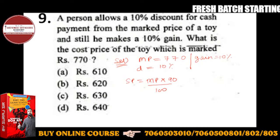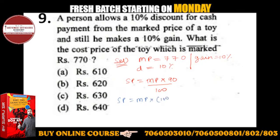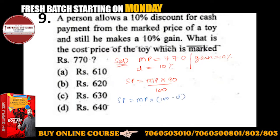Not in brackets. So SP is a function of MP. Here I have 100 minus discount percent upon 100.